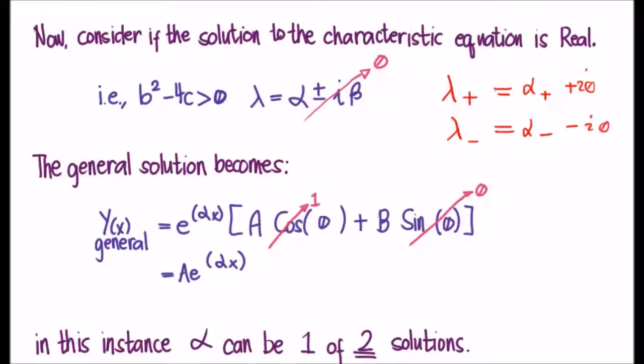The point here is that when we have real solutions, there are now actually two values for alpha, two real solutions, and no imaginary solutions.